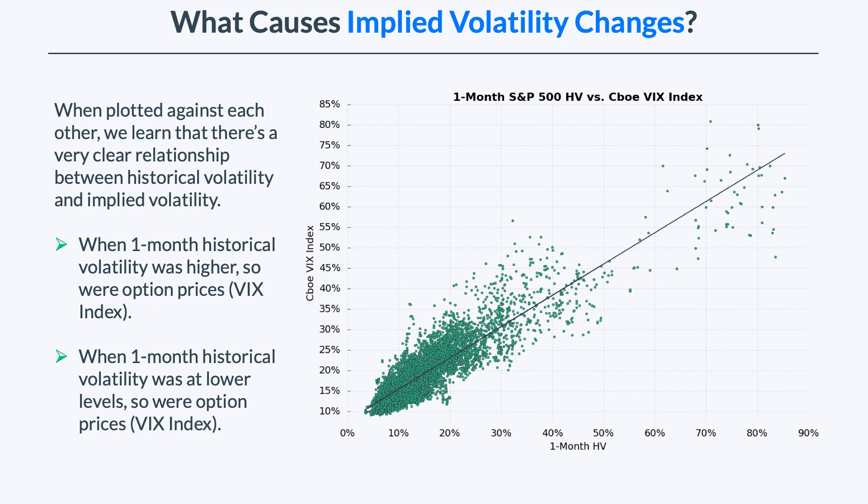When the S&P 500 had higher historical volatility readings — on the further right side of this chart — so were option prices on the S&P 500, as measured by the VIX Index. And when one-month historical volatility was at lower levels, so were the S&P 500 option prices, seen on the left-hand side of this chart. Basically, there's a very clear relationship between the historical volatility, or how volatile the market has been in recent history, and how expensive or cheap option prices are on that underlying.